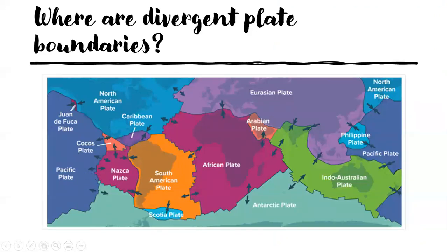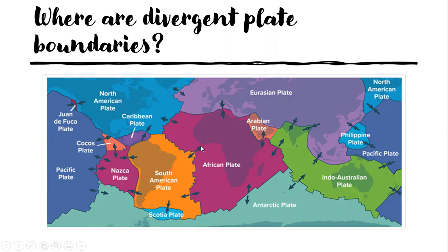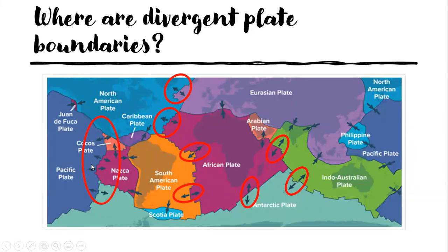Now let us find out where the divergent plate boundaries are. In this picture, divergent plate boundaries are the areas where plates are moving far away from each other. Here, two plates are moving far away — this one going right, this one going left. These are all divergent boundaries, and all of these marked here are divergent plate boundaries.